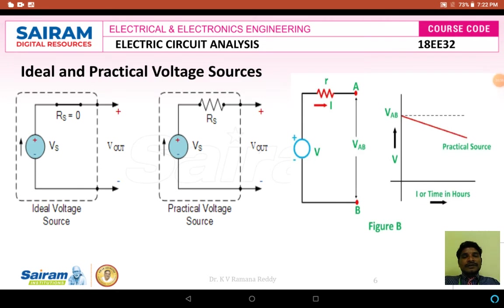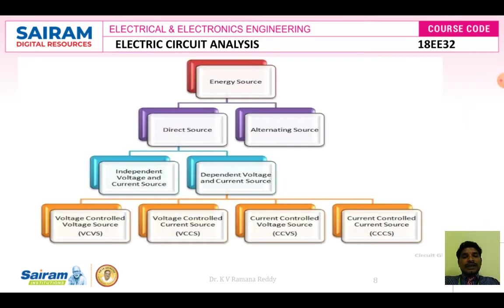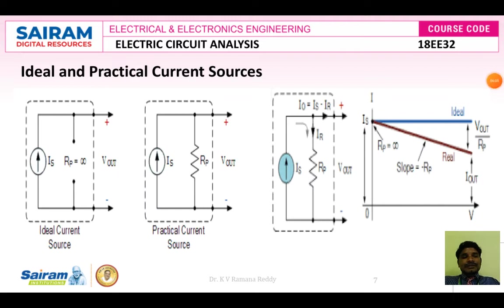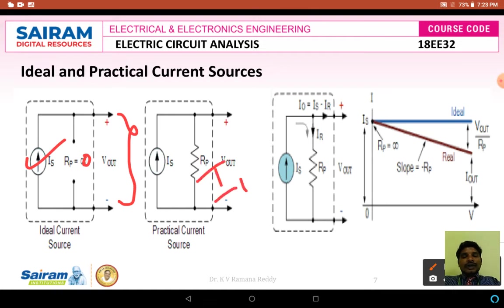Let us discuss the same concept with respect to current sources — ideal and practical current sources. Similar to voltage sources, an ideal current source has only the current source value IS and does not have any internal resistance. The internal resistance of an ideal current source is equal to zero, so the output current I_out of an ideal current source is equal to IS, since there is no source resistance.